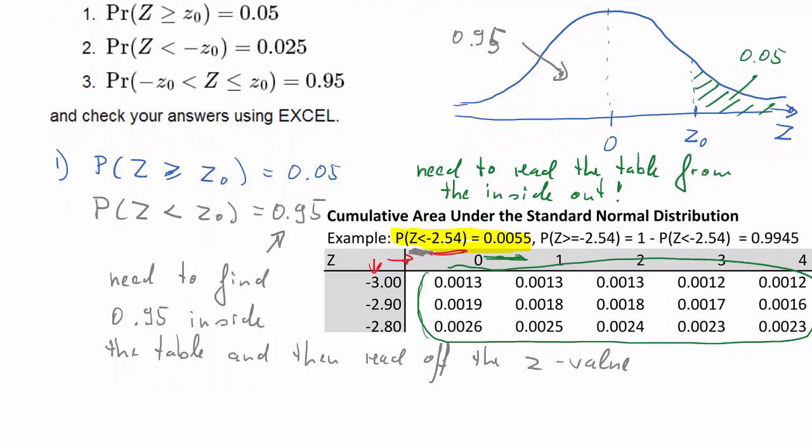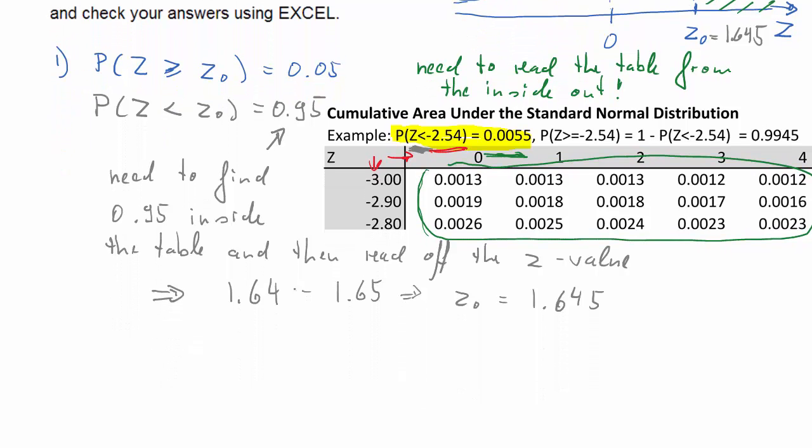So as our probability is between two values, it was between 1.64 and 1.65, we can just take the average of these two values and that's 1.645. And that would be approximately the right value, approximately the Z value that cuts off 5% in the right hand tail.